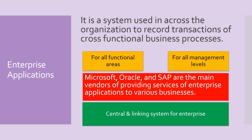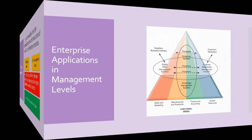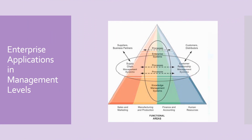These systems are designed by various vendors, of which Microsoft, Oracle, and SAP are most popular. These vendors have designed enterprise applications for various industries, which can be customized to fulfill specific organizational requirements. There are different types of enterprise applications. In this diagram, you can see four enterprise systems within ovals on the management levels. A vertical oval covers all management levels and functional areas, containing enterprise systems and knowledge management systems.